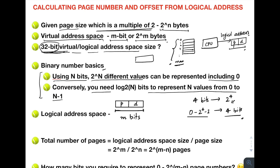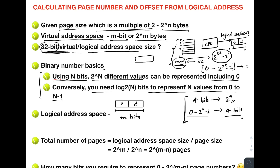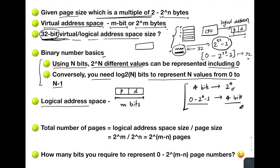So basically, a maximum of 32 bits is required for storing the entire range of logical addresses. The max logical address will be 2^32 minus 1. Since the numbers range from 0 to 2^32 minus 1, you need 32 bits to store them — similar to needing 4 bits for 0 to 15. So for an m-bit logical address space, you require at least m bits to store all the logical addresses.